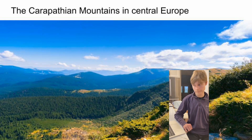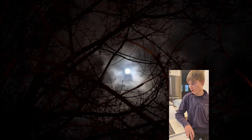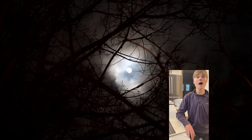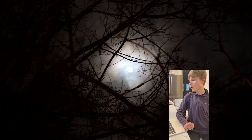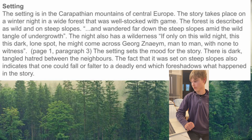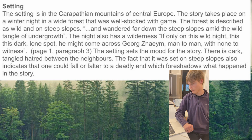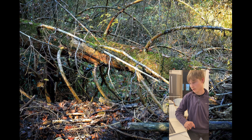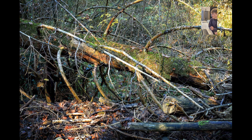The story took place on a winter night in a forest that was well-stocked with game. The forest is described as wild and on steep slopes. The narrator describes wandering far down the steep slopes amid the wild tangle of undergrowth. The night also has a wildness: 'If only on this wild night, this dark lone spot, he might come across Georg — man to man, with none to witness.' Page 1, paragraph 3. The setting sets the mood for the story. There is dark, tangled hatred between the neighbors. The fact that it was set on steep slopes also indicates that one could fall or falter to a deadly end, which foreshadows what happens in the story.